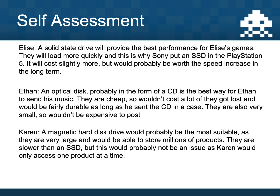For me, Elise should buy a solid state drive because it will provide the best performance and her games will load very, very quickly. It costs more but it's probably worth it if speed is what she's after. Ethan should buy an optical disc, probably a CD — they're really cheap so if it gets lost in the post it won't cost much. They're fairly durable so sent in a case the CD should arrive fine, and they're small enough to send in a normal envelope without many stamps. Karen should probably use a magnetic hard disk drive — she has lots of products to store and magnetic disks are the biggest. They're a little slower than an SSD but that's probably not an issue since Karen's likely only looking at one product at a time.